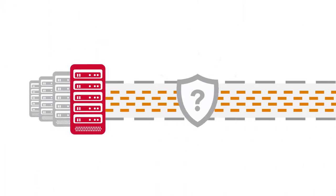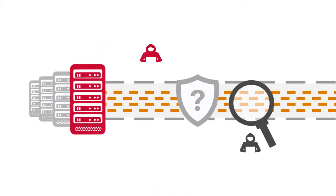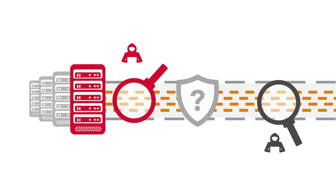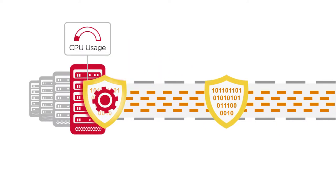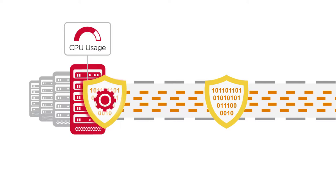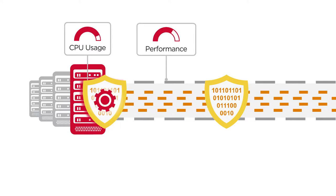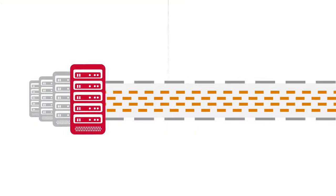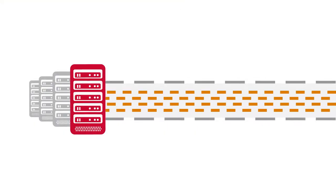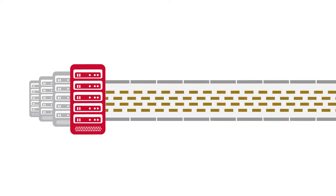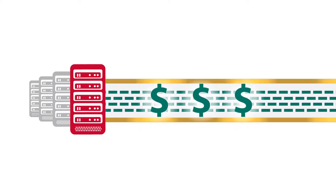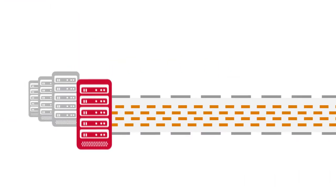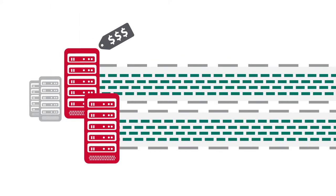Another big problem is that data can be exposed unencrypted in flight. Some arrays do offer encryption, but this puts extra load on the CPU, which degrades performance. Overcoming all these performance challenges usually requires paying for more expensive direct WAN connections with lower latency and less packet loss, or doubling up on gear to boost throughput.